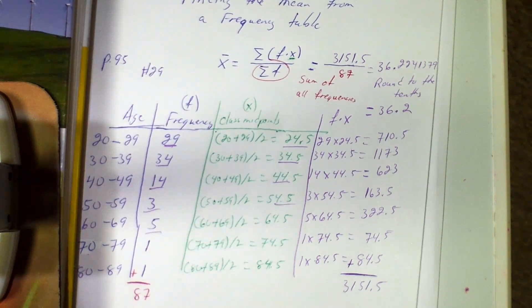And that's how you find the mean from a frequency table. Now you can try the second one, number 31, for practice, because 29 was on your homework and 31 is also on your homework. So try 31 on your own, and then check the answer in the back of the book to see if you got it right.